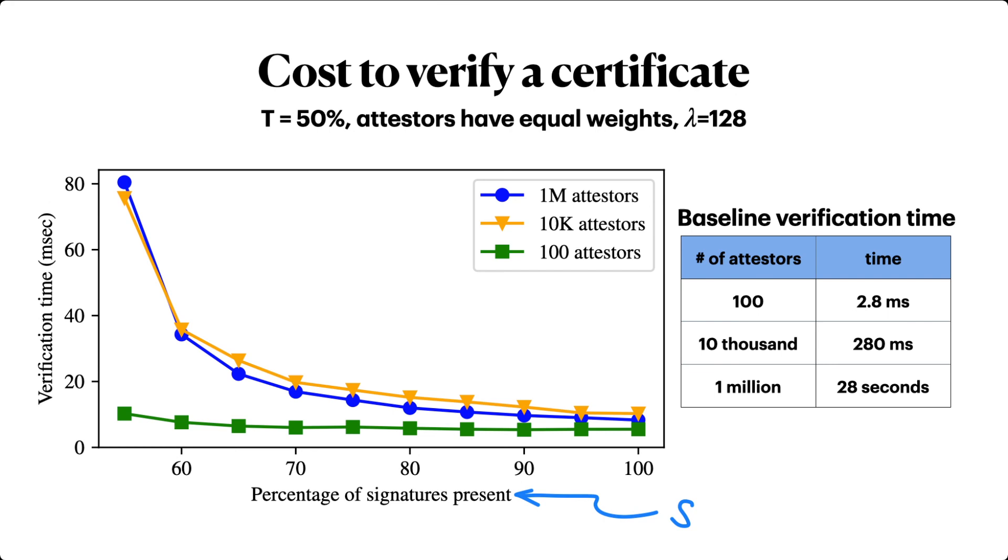As the total signed weight goes up, the number of verifier challenges, and thus the number of signatures that the verifier must check, goes down, with correspondingly reduced verification time.